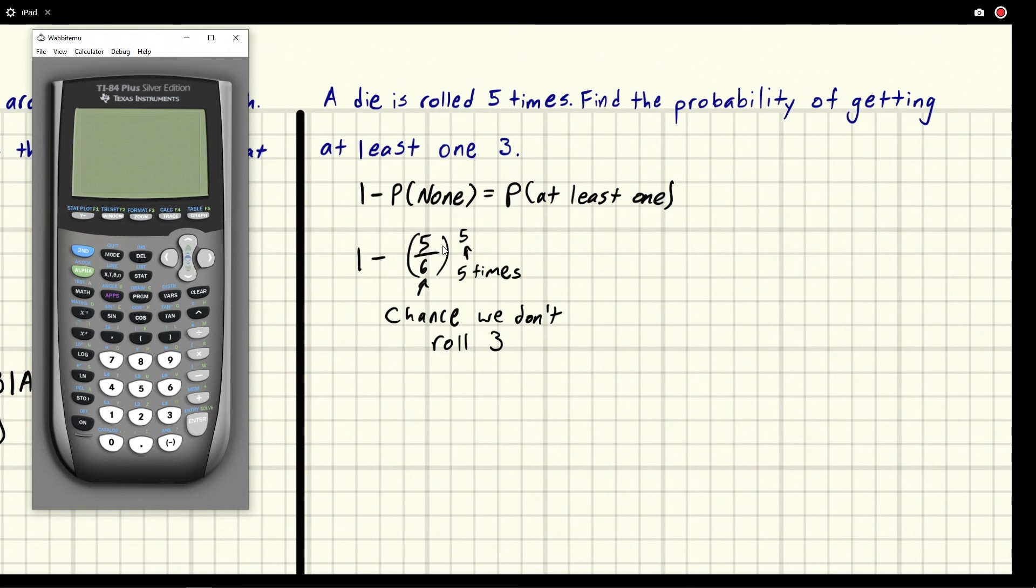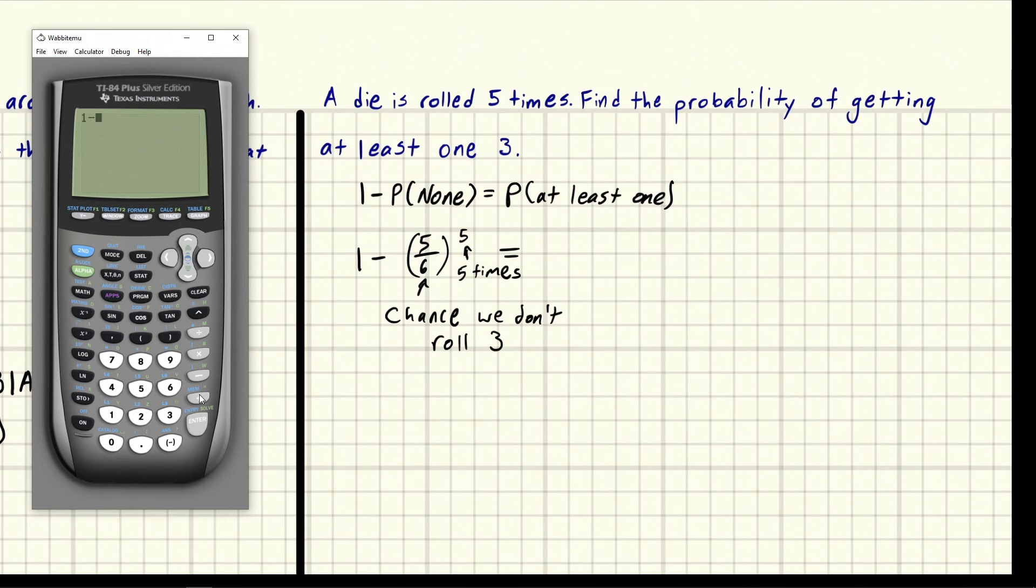So whatever this is going to be the probability of at least one. So we're going to do one minus, and then we're going to do five six. So five divided by six raised to the fifth. We get out a number, which is 0.598. This is the probability.